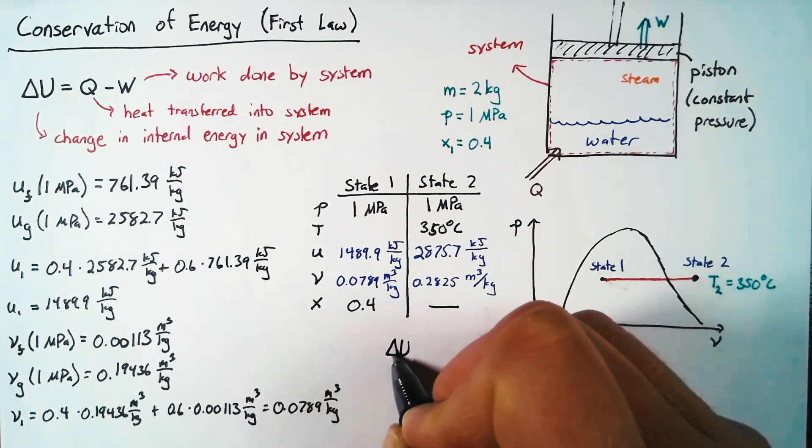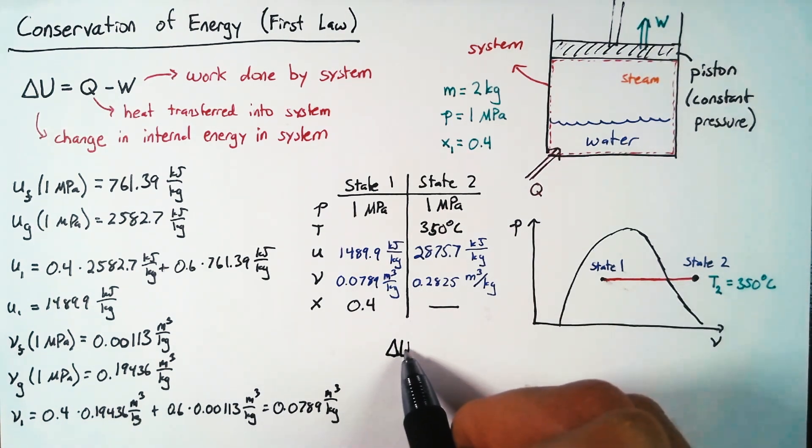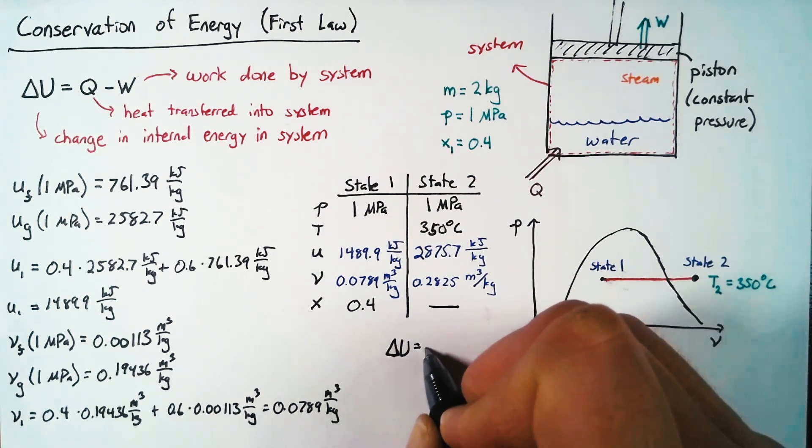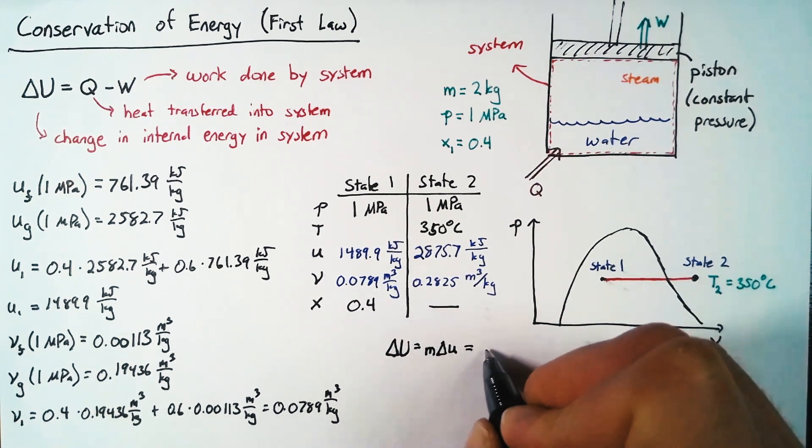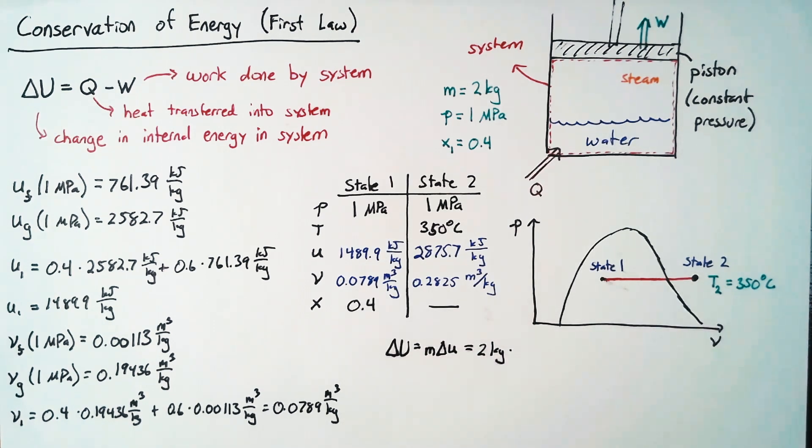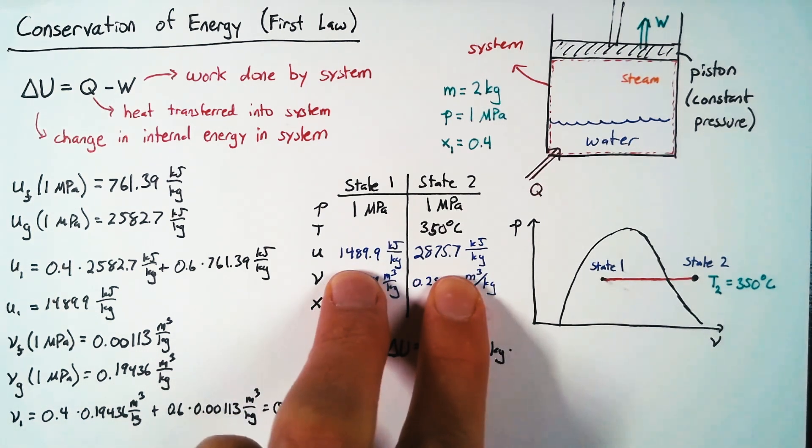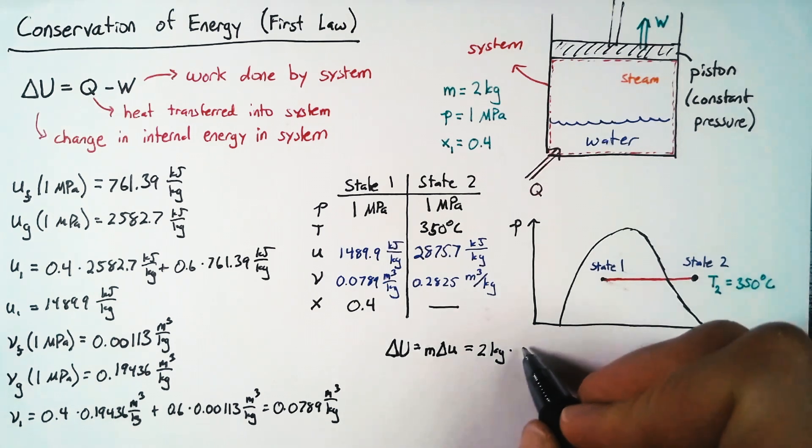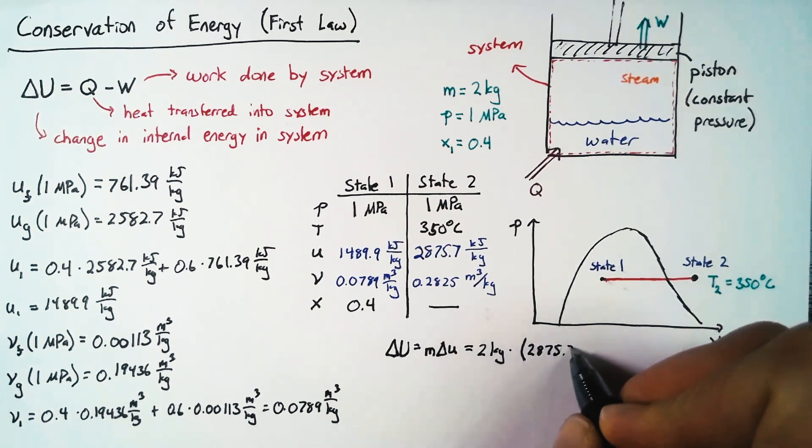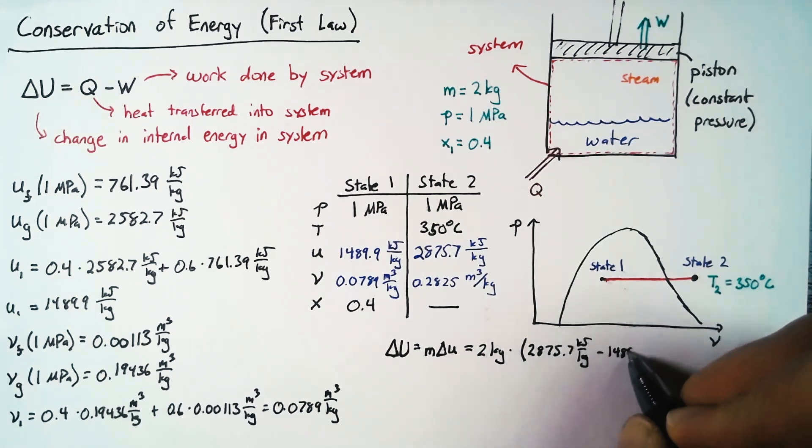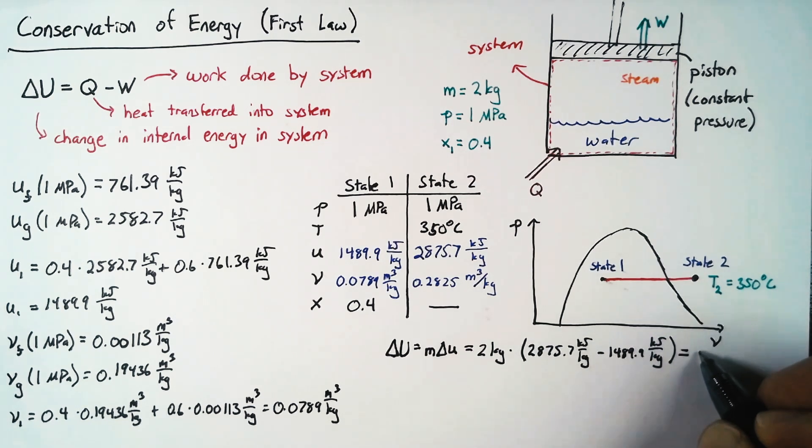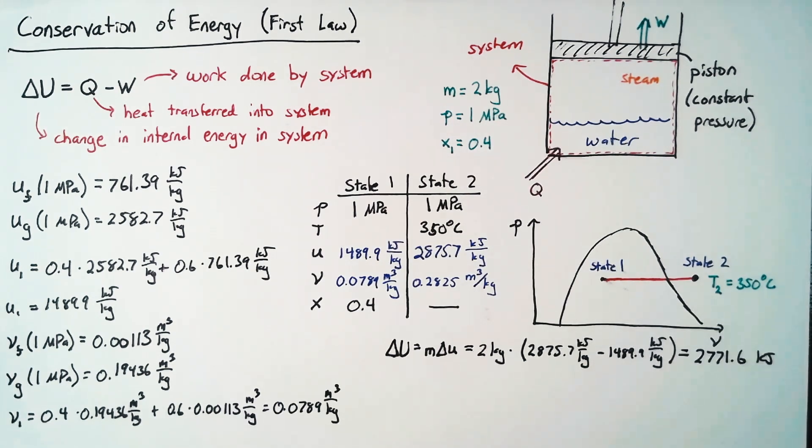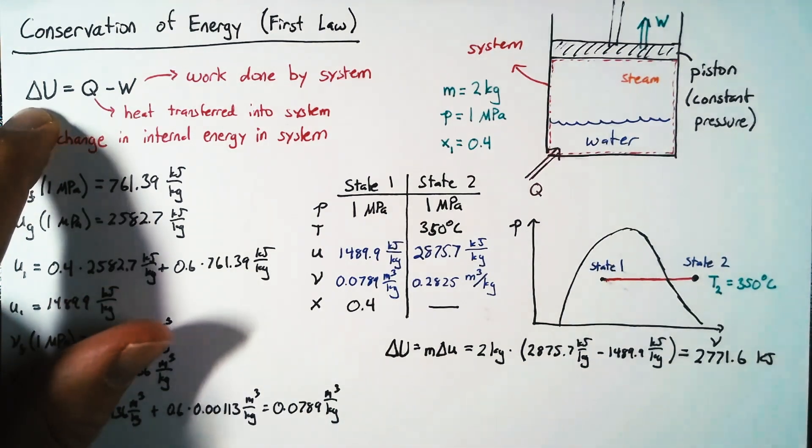We're going to recognize that delta capital U, this is the extensive property. That's going to be equal to mass multiplied by delta lowercase u. And so this is equal to our 2 kilograms multiplied by the difference in our internal energies here. And so this is our 2875.7 value minus our 1489.9 value. And doing that math gives us a value of 2771.6 kilojoules. And so this right here is the first part of our conservation of energy.